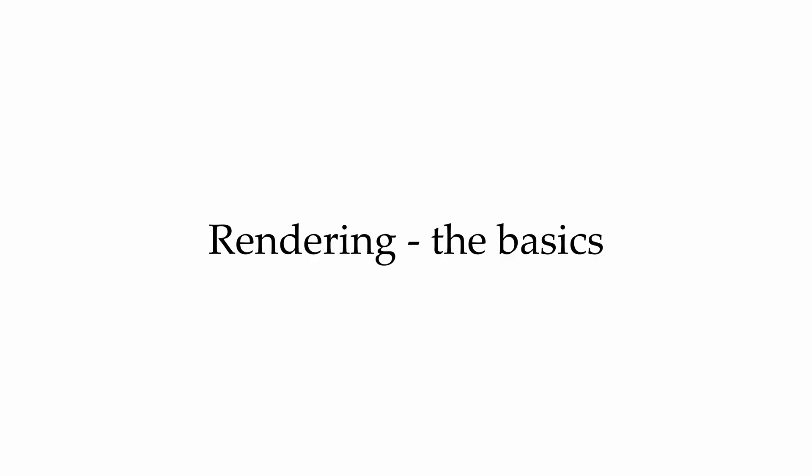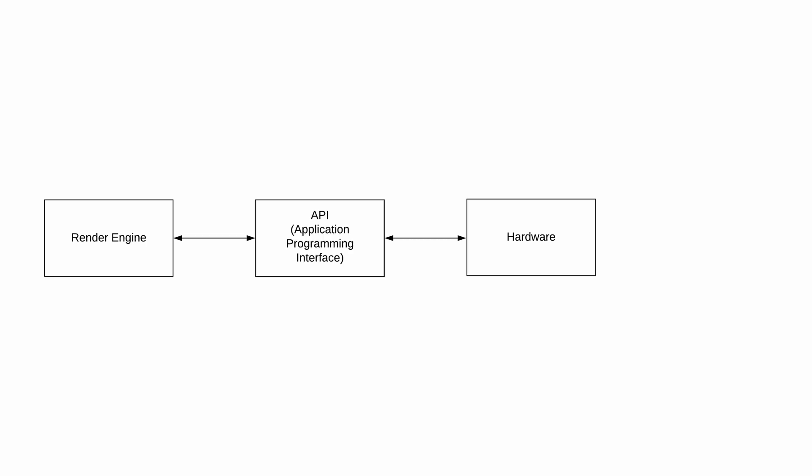First we're going to talk about what role software plays in 3D rendering, and it's a lot more important than most people think. How fast an image can be rendered mostly boils down to three factors: the render engine, the hardware that is being used to do all necessary calculations, and an API that is in charge of communications between the two.